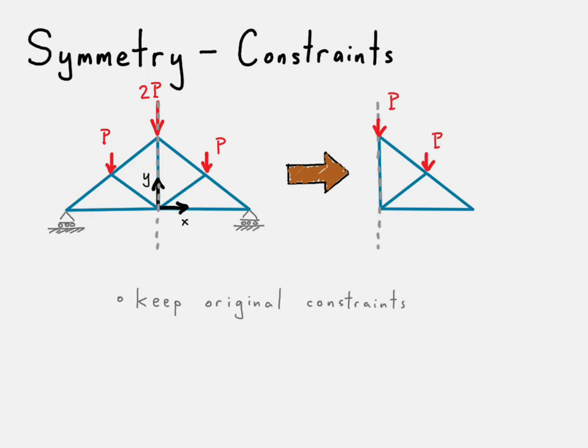And first thing we do is we keep all the original constraints that are off the axis of symmetry. So, in this case, that roller constraint that we have there on the right side gets propagated over to the symmetric model.